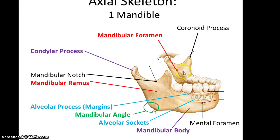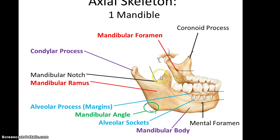On the inside of the mandible is the mandibular foramen. Also, before moving on, there is the coronoid process — so going from the condylar process to the mandibular notch to the coronoid process. And that is that for this portion of the lecture. Thank you!